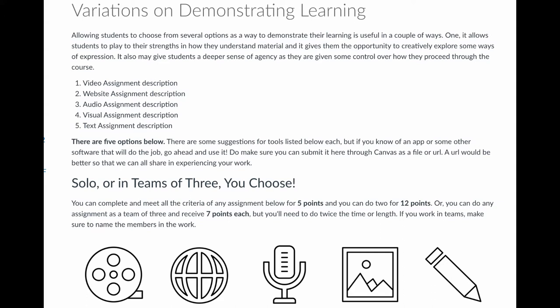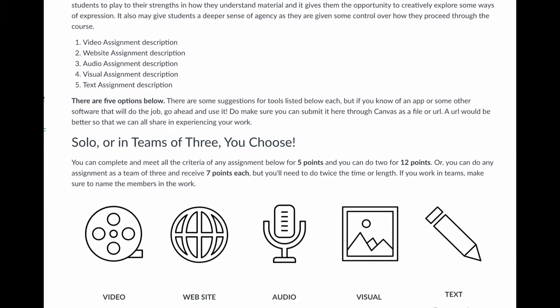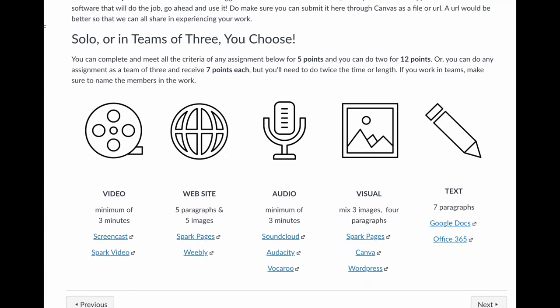So here you would create the criteria for each of those expressions of the work. Additionally you can allow them to maybe work in groups or do more than one of the items. So instead of just writing one two-page paper, they could write a two-page paper and do a podcast. And again these are just examples.